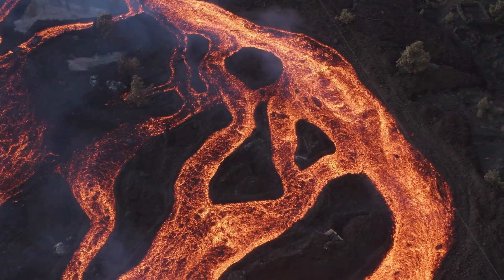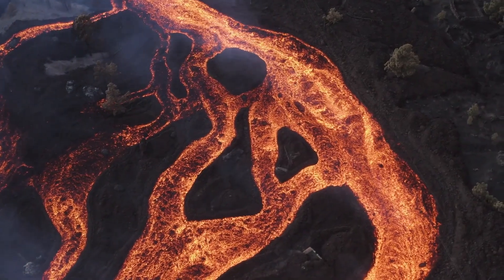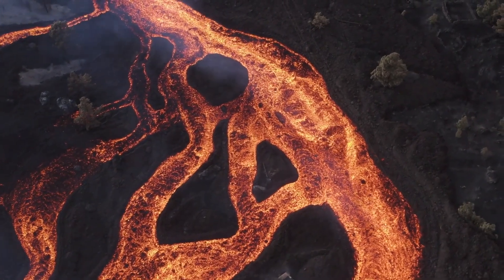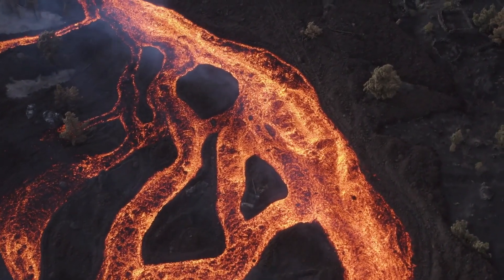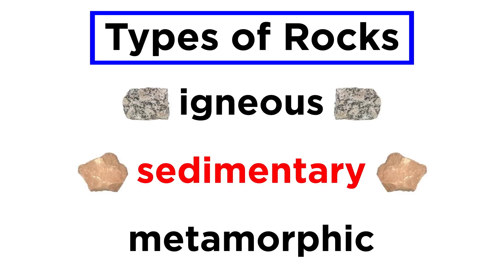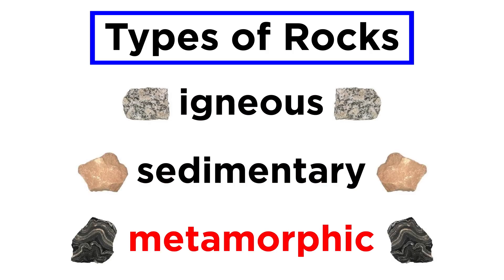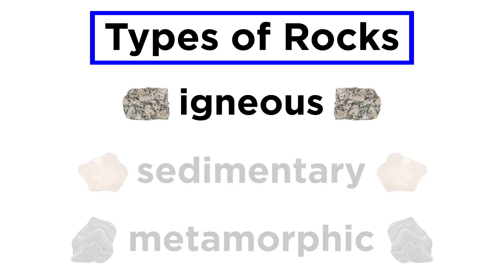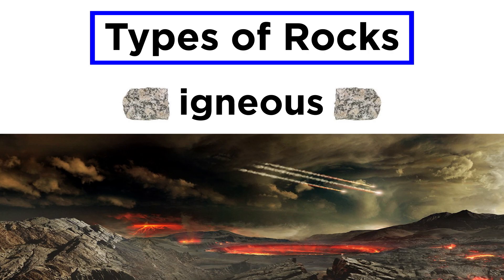Here we will discuss the crystallization of magma and the importance of its chemistry in determining a rock's mineralogy. There are three types of rocks — igneous, sedimentary, and metamorphic — and these differ in their mechanism of formation. We will begin our discussion with igneous rocks, which were the first type of rocks to appear on earth after its formation and subsequent cooling.